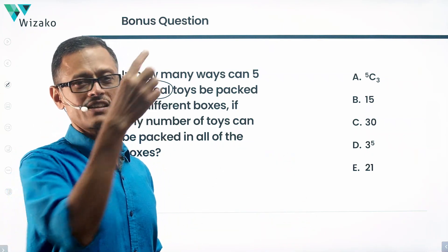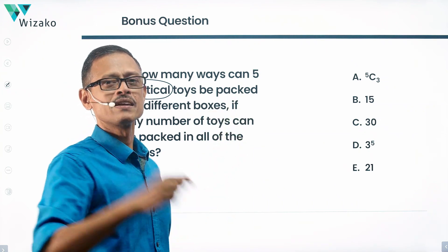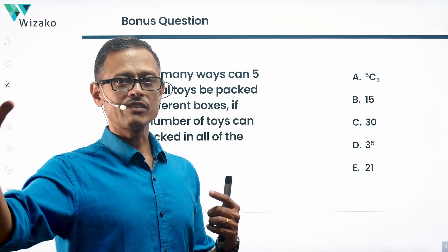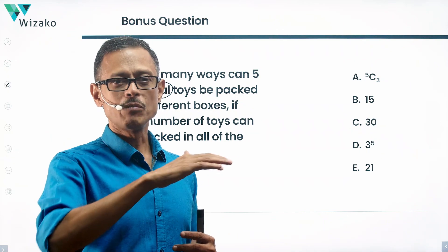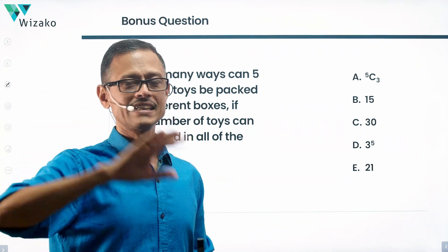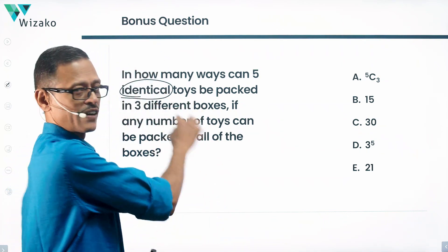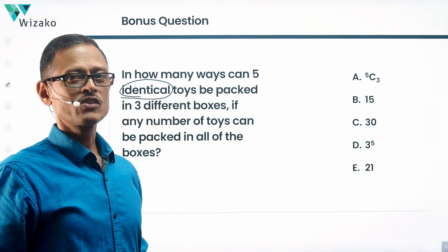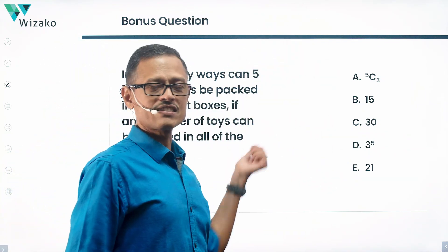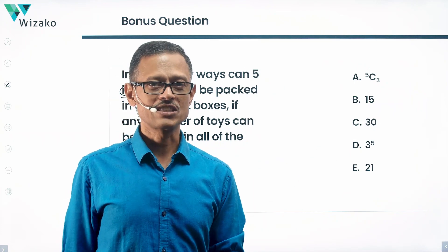The only difference between the given question and the bonus question: the given question, the five letters L1, L2, L3, L4, L5 were distinct letters. The boxes were postbox one, two, three, distinct. Here the boxes are different, but the toys are identical. So how do you go over it? These are the five answer options. Try this question and post your answers in the comment section.